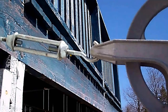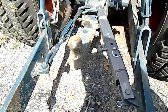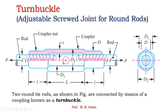These are some of the applications of the turnbuckle. You can see this is a turnbuckle — one is having left hand thread, another is having right hand thread, and both are connected by means of a coupler which is hollow at the center and having hexagonal ends. One more application you can see here. So, turnbuckle is nothing but an adjustable screwed joint for round rods.